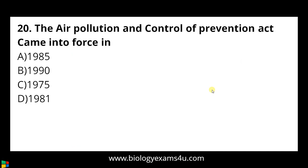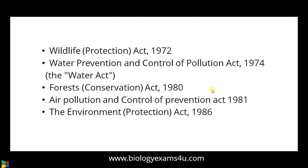Question number twenty: the Air Prevention and Control of Pollution Act came into force in — a) 1985, b) 1990, c) 1975, d) 1981. The answer is 1981. Key environmental acts to remember: Wildlife Protection Act 1972, Water Prevention and Control of Pollution Act 1974, Forest Conservation Act 1980, Air Prevention and Control of Pollution Act 1981, and Environmental Protection Act 1986.